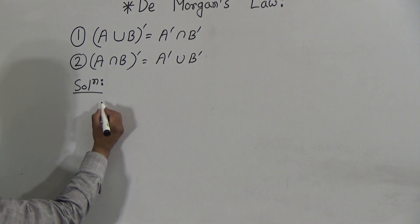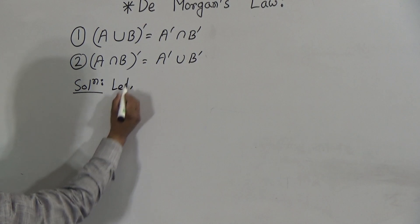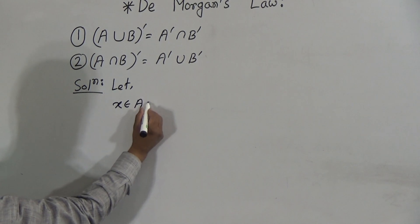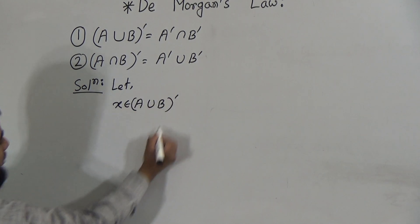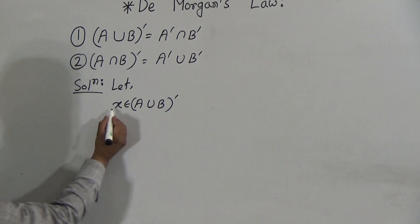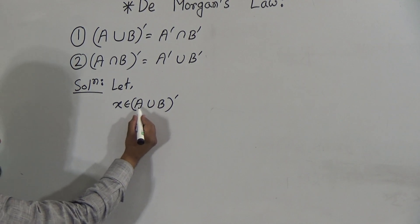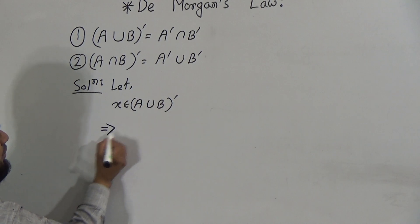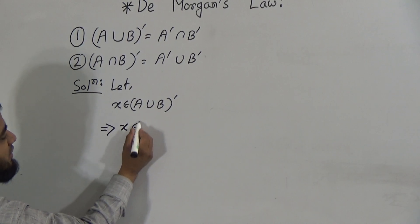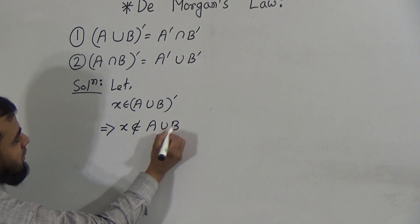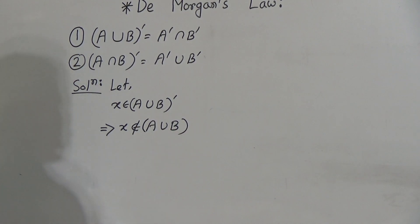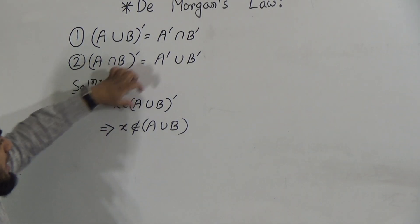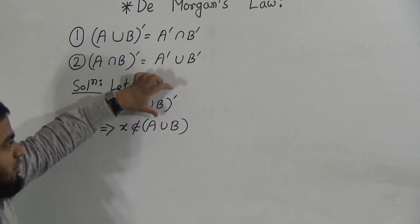Assume that x is an element which belongs to the left hand side, that means A union B whole prime, or the complement. x belongs to A union B whole prime. That means x does not belong to the set A union B, because x is in the complementary set of A union B.